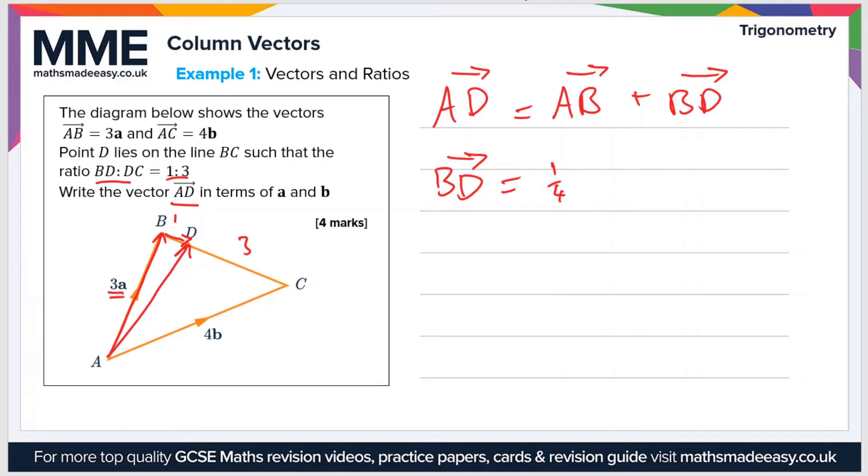So now we need an expression for BC. So BC is this line here, and now to get from B to C what we can do is we can go from B to A, so that's minus 3a, and then we can go from A to C which is the vector 4b.